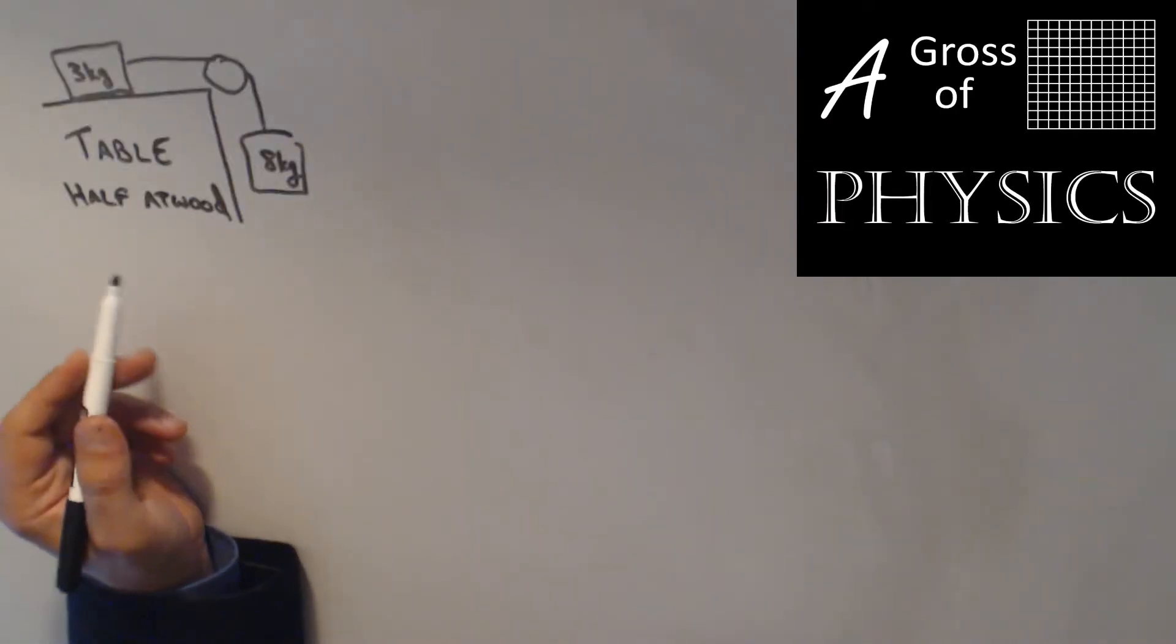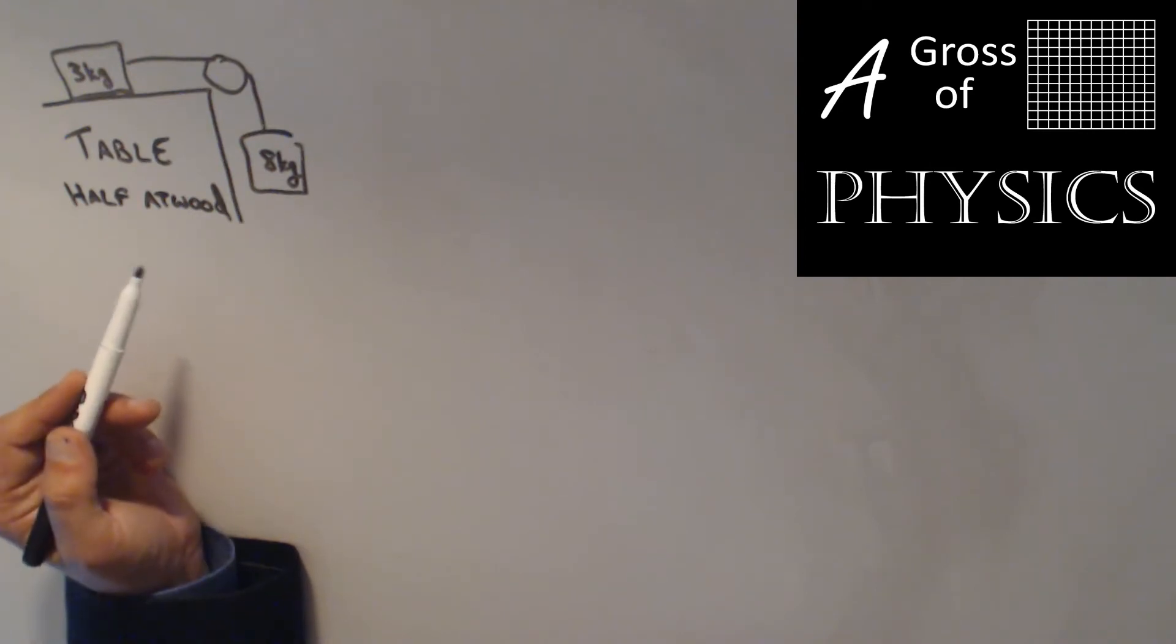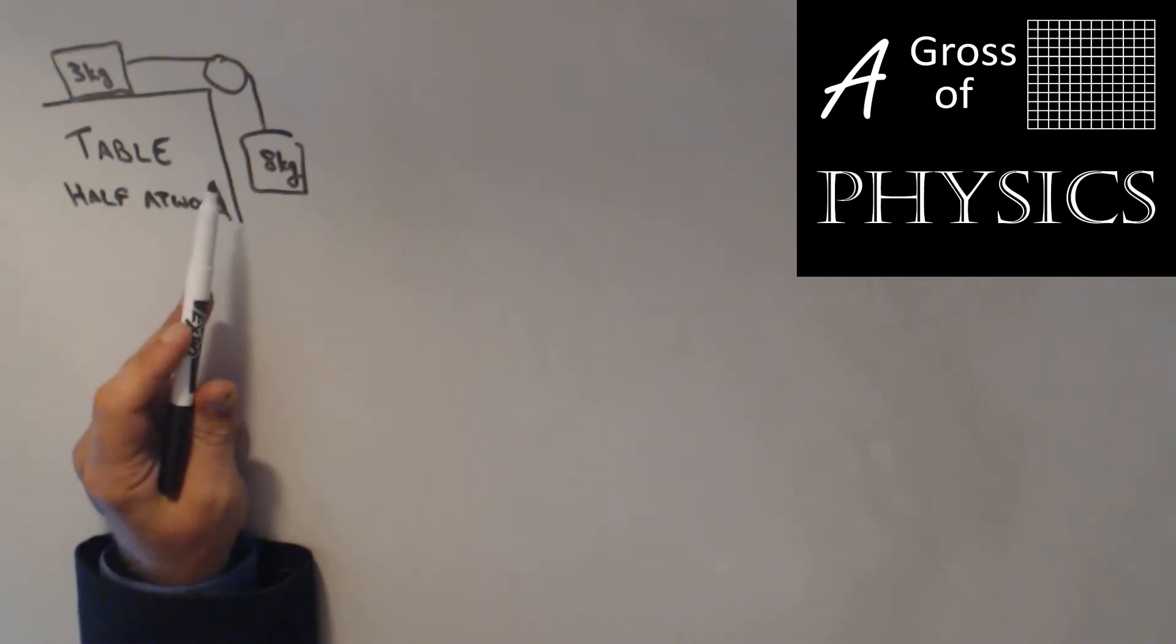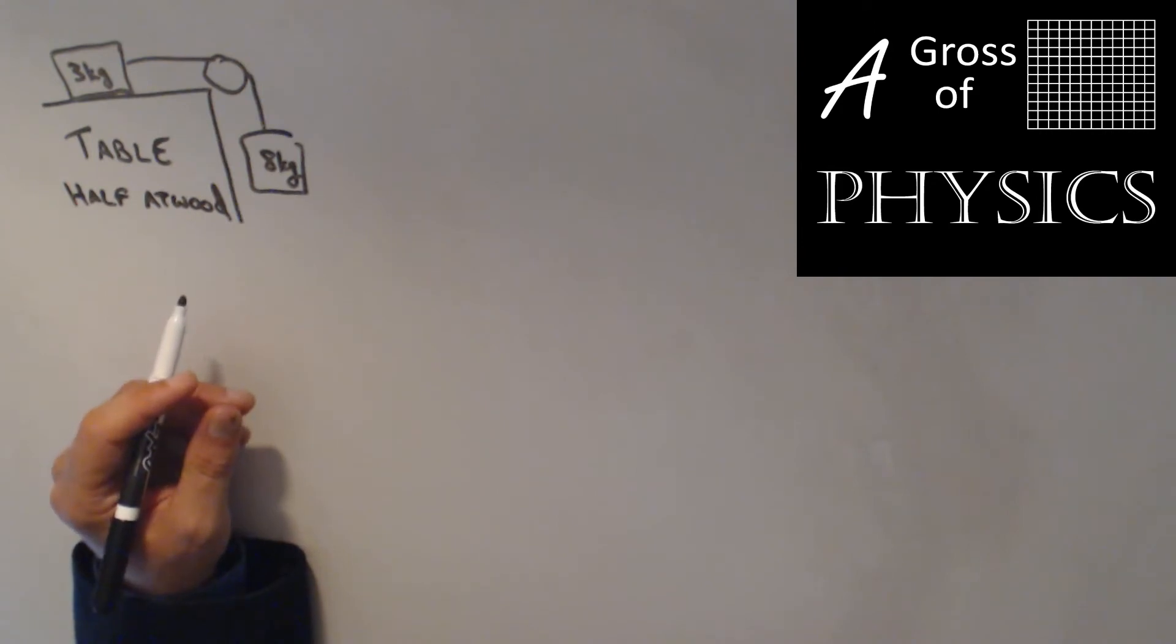The Atwood's machine allows us to study acceleration that's slower than the 9.8 m/s² we're used to when we drop objects. It allows us to have accelerations in the laboratory or classroom setting that are more manageable. We could time how long it takes an object to move sideways if it's accelerating at 2 or 3 m/s² as opposed to 9.8 where we have less than a second or at most two seconds within a classroom.